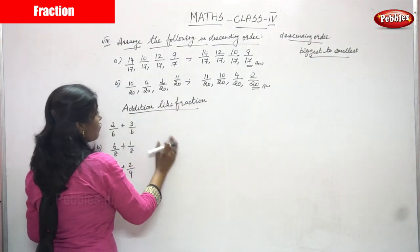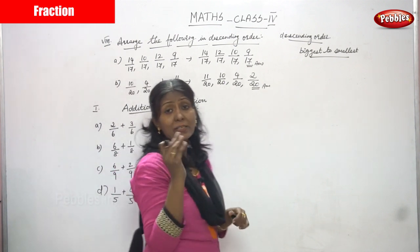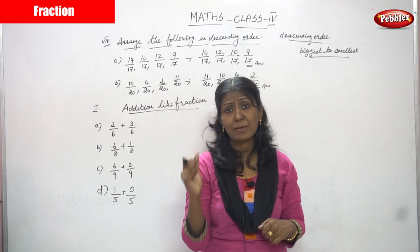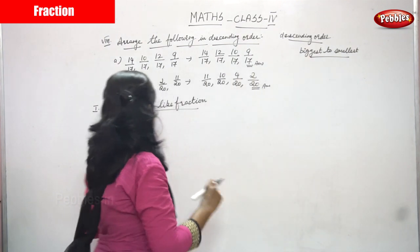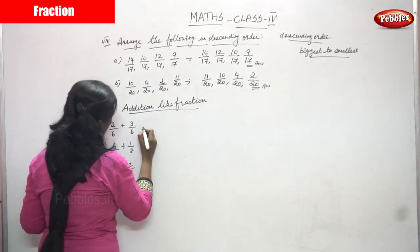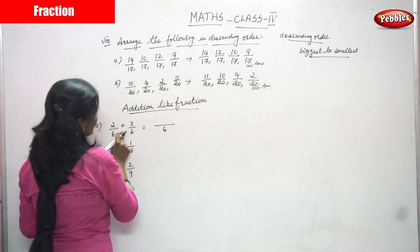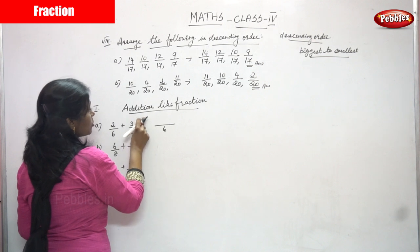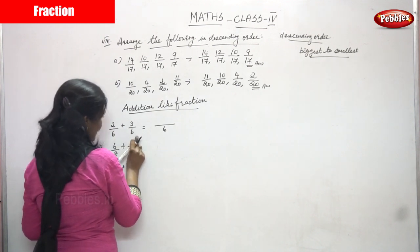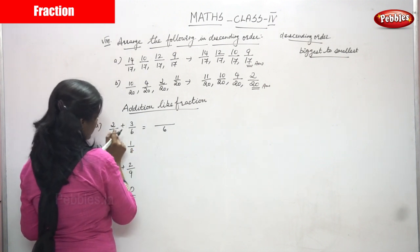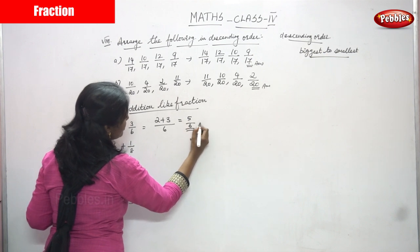Descending order is over. Now we move to addition of like fractions — this is a new topic, the first subdivision. Like fractions means the denominators are always the same. If the denominators are the same, it is a like fraction. We are going to see addition of like fractions. So: 2 by 6 plus 3 by 6 — all denominators are the same, so write the denominator once and add the numerators. 2 plus 3 gives 5, so the answer is 5 by 6.